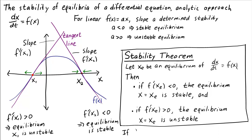Unfortunately, the stability theorem doesn't cover one case: when the derivative f prime is zero. If the derivative is zero, the theorem fails to tell us anything — the equilibrium could be stable, unstable, or something else. So we'll just say we don't know the answer if we get a zero derivative at the equilibrium. But as long as the derivative at the equilibrium is non-zero, we can determine, without graphing f, whether or not the equilibrium is stable.